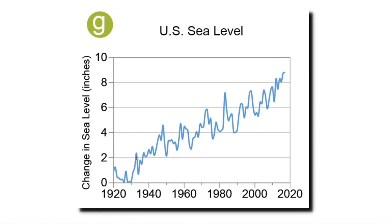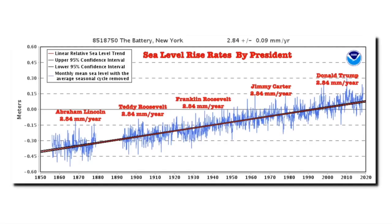Here's one more graphic showing U.S. sea level rising over the past century, as if sea level around the U.S. could somehow be different than the rest of the world. Now let's look at what they're hiding. Sea level has been rising at the same rate for thousands of years. This graph from NOAA, made from data from the tide gauge of lower Manhattan, shows that sea level has been rising at a steady rate since the middle of the 19th century — 2.84 millimeters per year under Abraham Lincoln, Teddy Roosevelt, Franklin Roosevelt, Jimmy Carter, and during Donald Trump's first term. In other words, there's no indication that humans have had any impact on the rate of sea level rise.